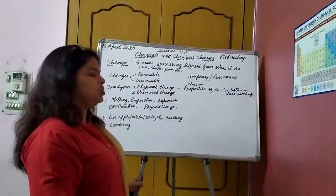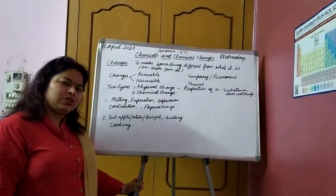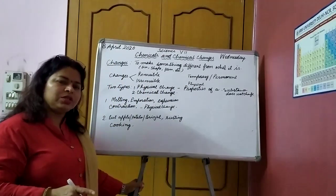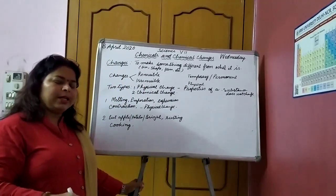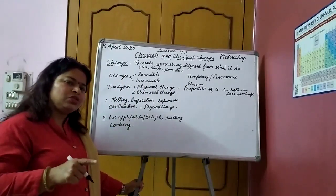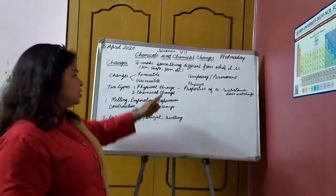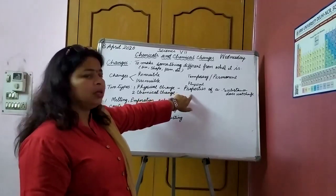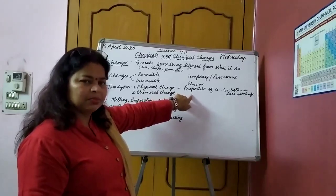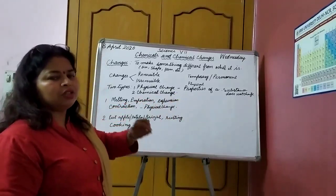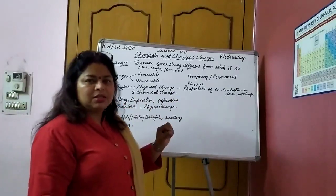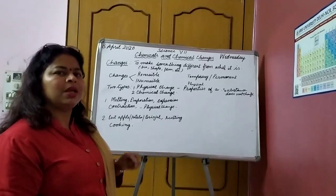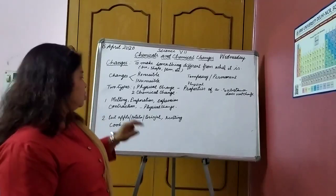The other type of change is chemical change. What do you mean by chemical change? Chemical changes are those changes in which the chemical properties of the substances change. In physical change, only physical properties were subject to change, but chemically the substance was the same. But if the chemical properties of a substance change, then we call it a chemical change.